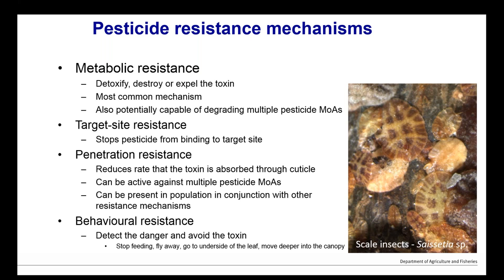An individual with very different target sites will have more resistance than one with a target site only a little bit different. Third, penetration resistance — the toxin isn't absorbed through the cuticle. When this type of resistance is present at the same time as another type, you can have major problems with resistance to a large number of pesticide mode of action groups. Two-spotted mite is probably in that category — research shows they can turn on different enzymes to detoxify and destroy many different types of pesticides.